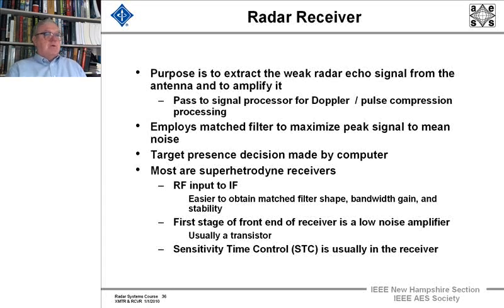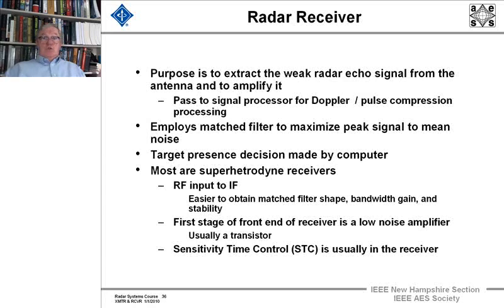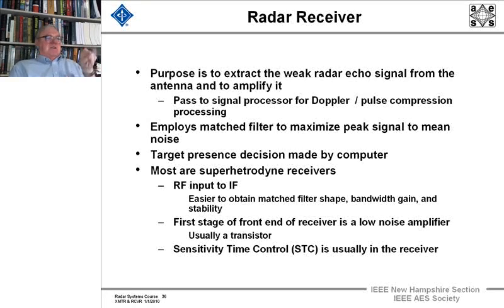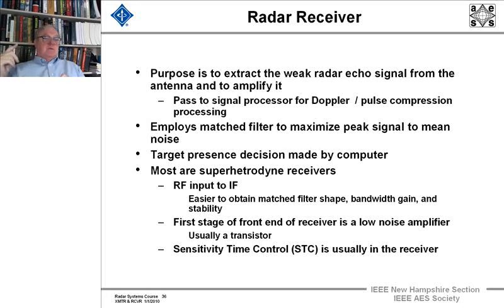Most radar receivers are what we call superheterodyne. We don't generate a signal in the waveform generator at the same frequency we're going to transmit. We shift the frequency to an intermediate frequency and amplify that, and then it's transmitted up to the main frequency — a series of frequency shifts. This particular example will show one intermediate frequency. It's easier to obtain matched filter shape, bandwidth gain, and stability if we go through this process.